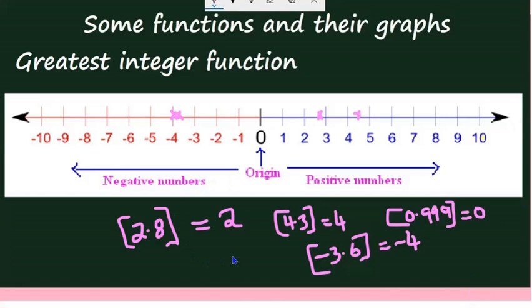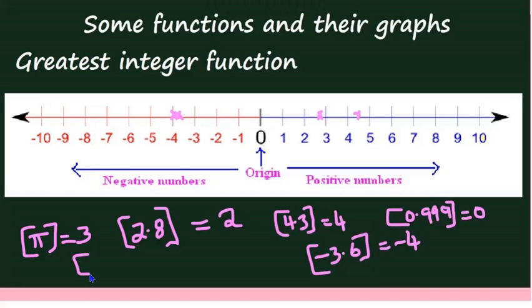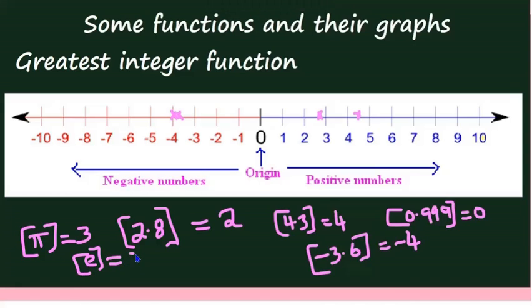What is ⌊π⌋? The value of π is approximately 3.14, and the greatest integer less than 3.14 is 3. So ⌊π⌋ = 3. What is ⌊e⌋? Since e ≈ 2.718, the greatest integer function gives ⌊e⌋ = 2. Once you understand this, it is easy to write the domain, range, and draw the graph of the greatest integer function.